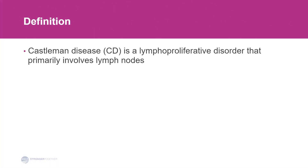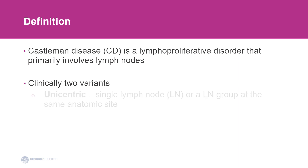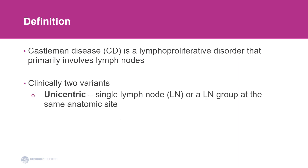Castleman disease is a lymphoproliferative disorder that primarily involves lymph nodes. Clinically, two variants are recognized: unicentric and multicentric. In the unicentric variant, a single lymph node or a lymph node group at the same anatomic site is involved, while in the multicentric variant, multiple lymph node groups are involved.